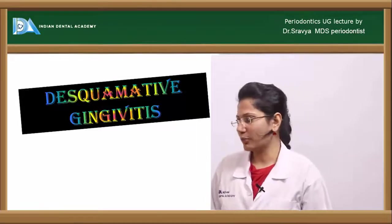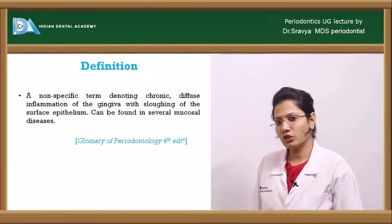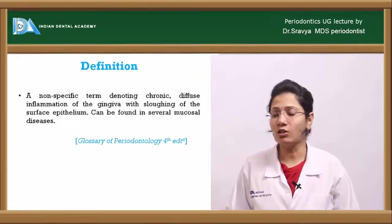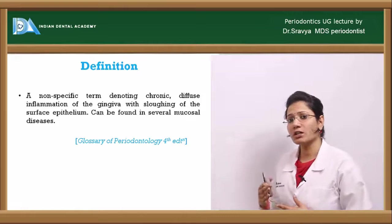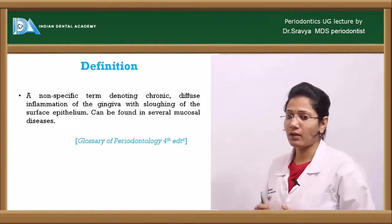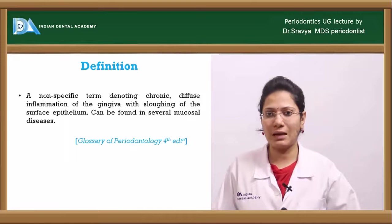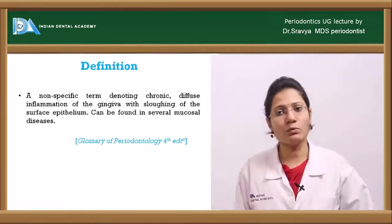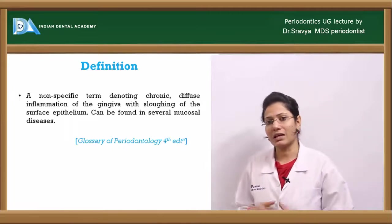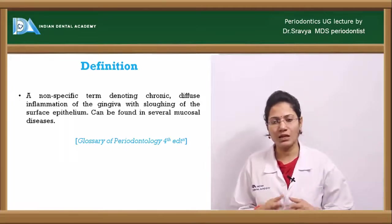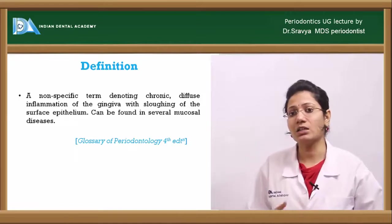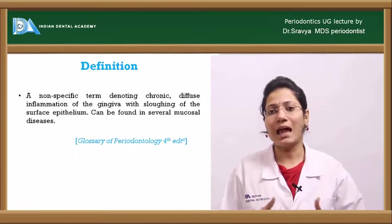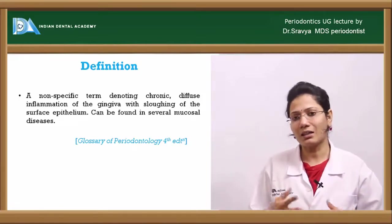The topic is desquamative gingivitis. According to the definition, it is a nonspecific term which denotes a chronic diffuse kind of inflammation of the gingiva with sloughing of the surface epithelium that can be found in several mucosal diseases. Most of the time when they describe desquamative gingivitis, they don't call it a disease condition — it is one of the clinical signs of an underlying disease, which can be a mucocutaneous disease or anything else.